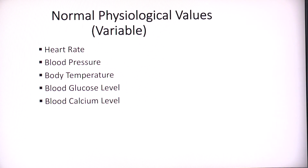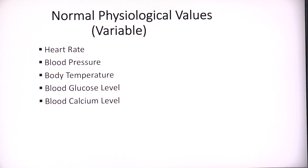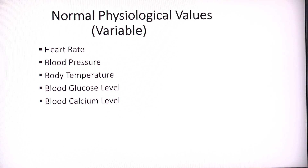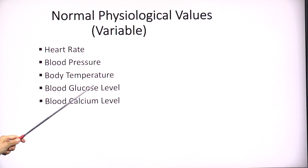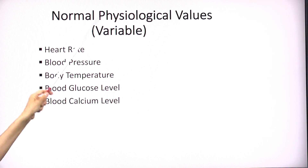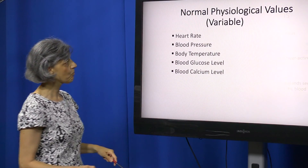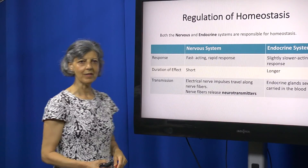An example is heart rate — everybody has an average heart rate, and if it goes too much faster or too much slower than the norm, this person has some disease. The same applies to blood pressure — we have a set average of blood pressure — as well as body temperature, and blood levels of substances such as glucose or calcium. These are some variables we're going to discuss in a moment.